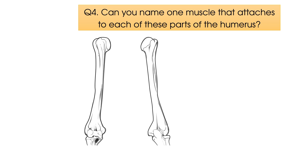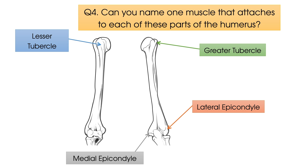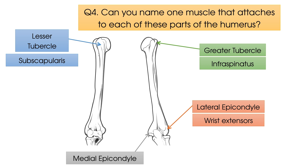Question number four: highlighted here are four very important parts of the humerus where different muscles attach. Can you name one muscle that attaches to each? The main muscle that attaches to the lesser tubercle is the subscapularis, which pulls the humerus into internal rotation. An example of a muscle attaching to the greater tubercle is the infraspinatus, which pulls the humerus into external rotation — supraspinatus and teres minor also attach here. The lateral epicondyle is where the common extensor tendon attaches, with examples including extensor digitorum and extensor carpi ulnaris. The medial epicondyle is where the common flexor tendon attaches, with flexor carpi ulnaris and flexor carpi radialis as examples.